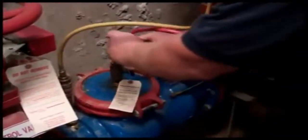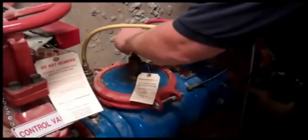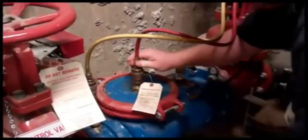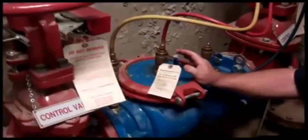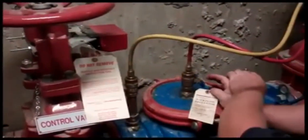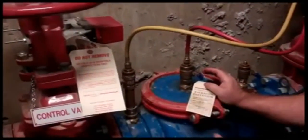The technician connects two of the tubes from the backflow test kit to the backflow. This is going to be used to verify the pressure difference on the supply side and the discharge side of the first check in the backflow preventer.